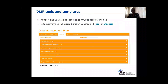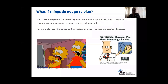Where can you find a DMP template? Often funders or universities will specify which template to use. Otherwise, you can find tools and templates online — for example, this one is from the UK's Digital Curation Center. Remember that good data management is a reflective process; it's important to be flexible and allow for changes and additions as your project evolves. Keep your plan as a living document, which is continuously revisited and adapted if necessary.